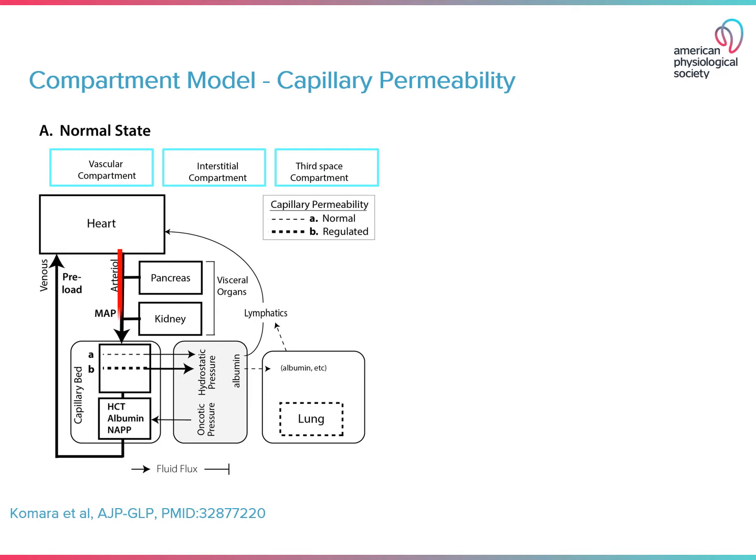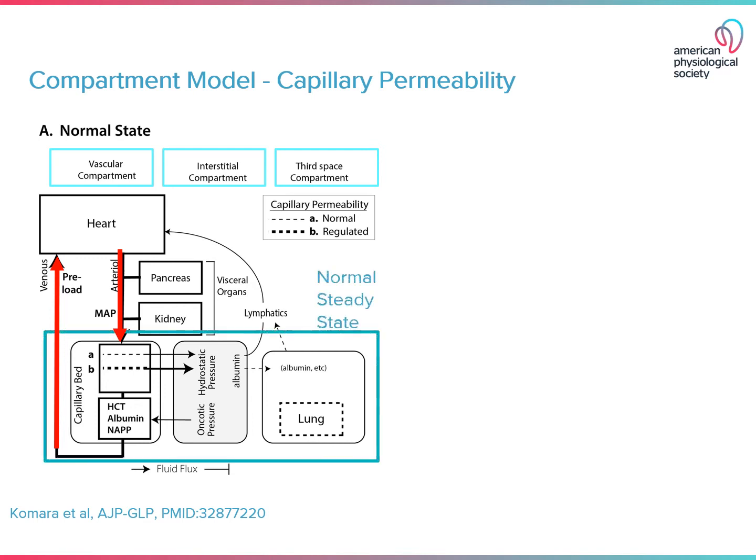Under normal conditions, the heart pumps blood to the capillary bed where fluid and electrolytes can exit through small pores into the interstitial space. Some albumin also enters the interstitial space. In the low-pressure side of the capillary bed, the red blood cells, albumin, and non-albumin protein produce an oncotic pressure to draw fluid back out of the interstitial compartment and into the vascular compartment for return to the heart to complete circulation. There is a steady state in the capillary bed.